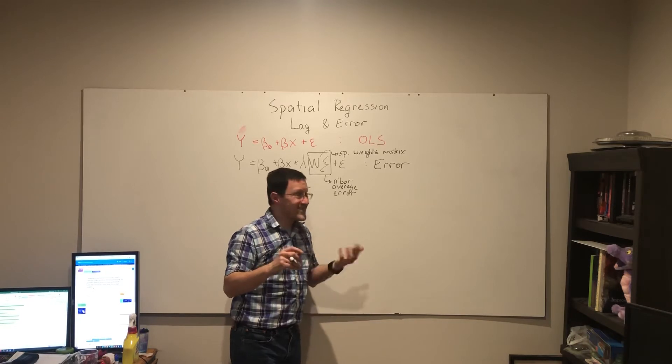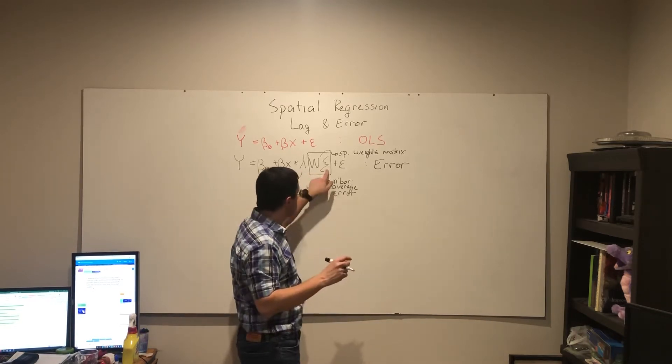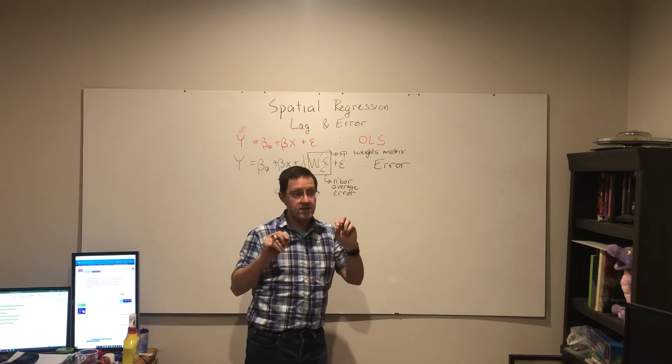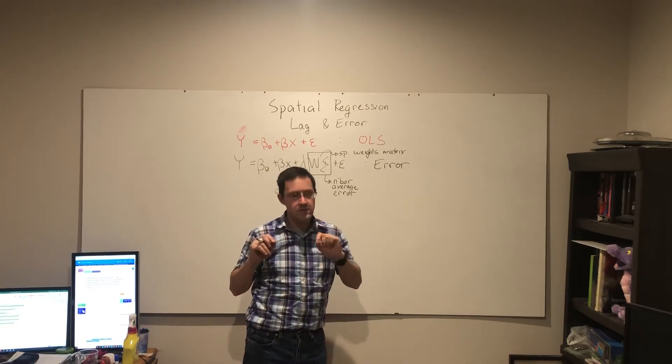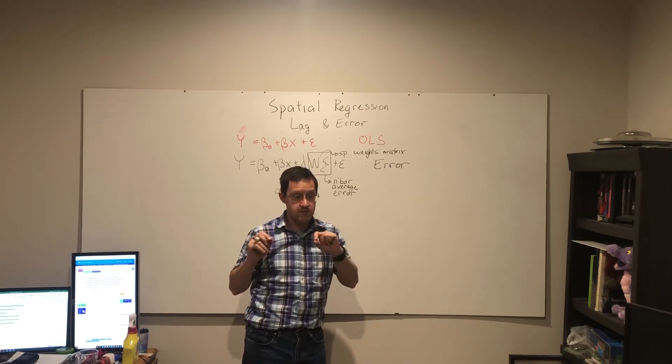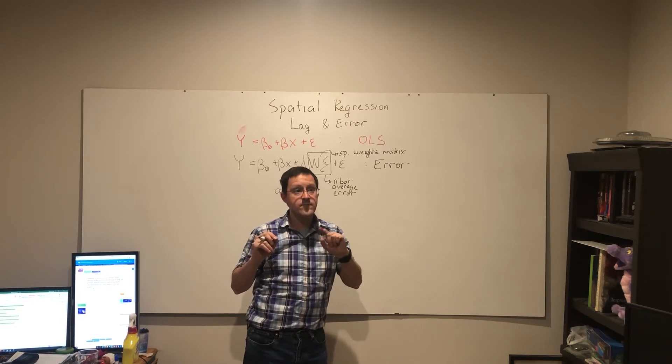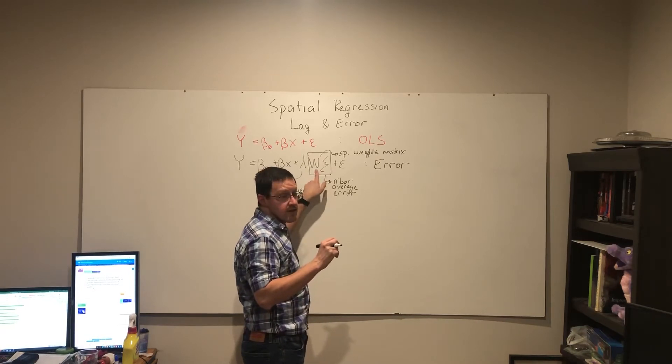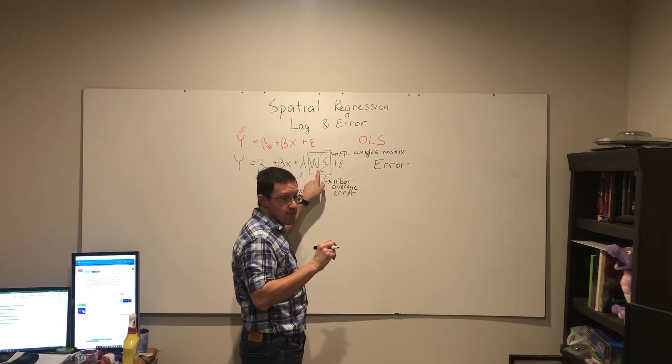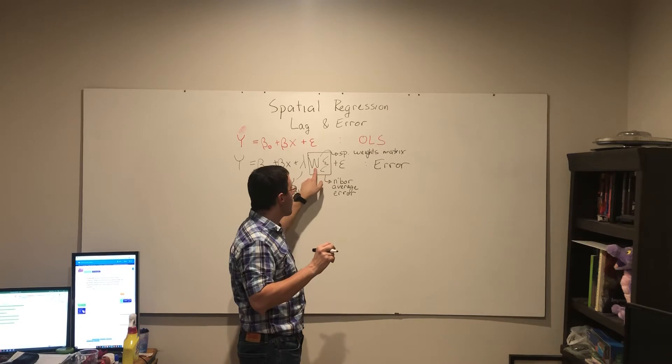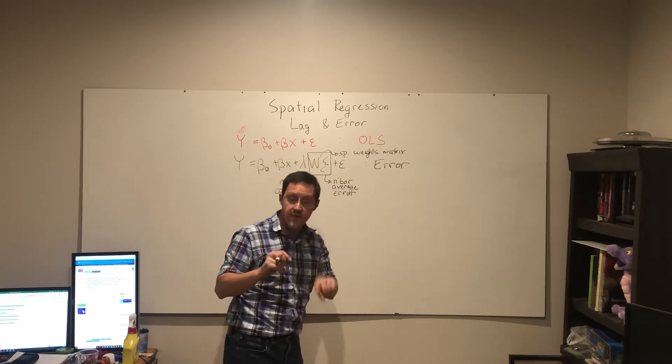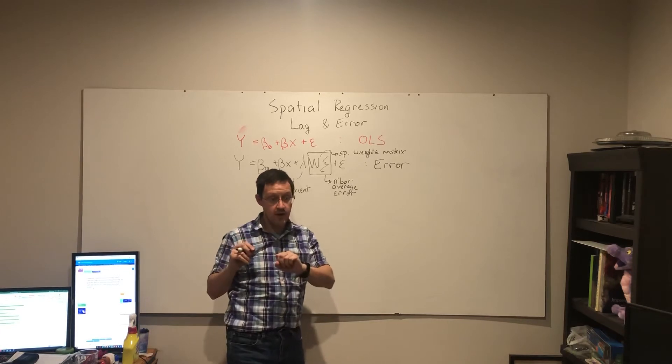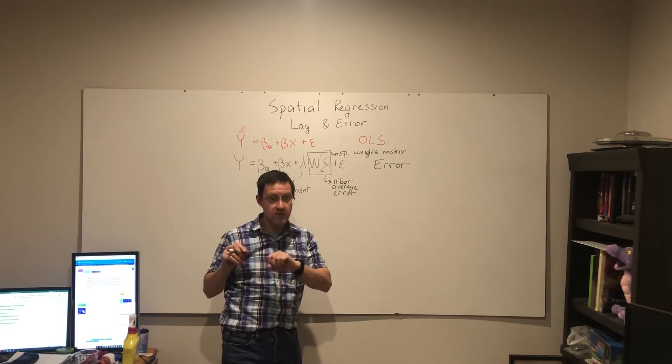So what this is saying is, okay, if Monongalia County has a large error in the positive direction, I am now going to incorporate this into the neighbors' averages as another independent variable within that regression equation.